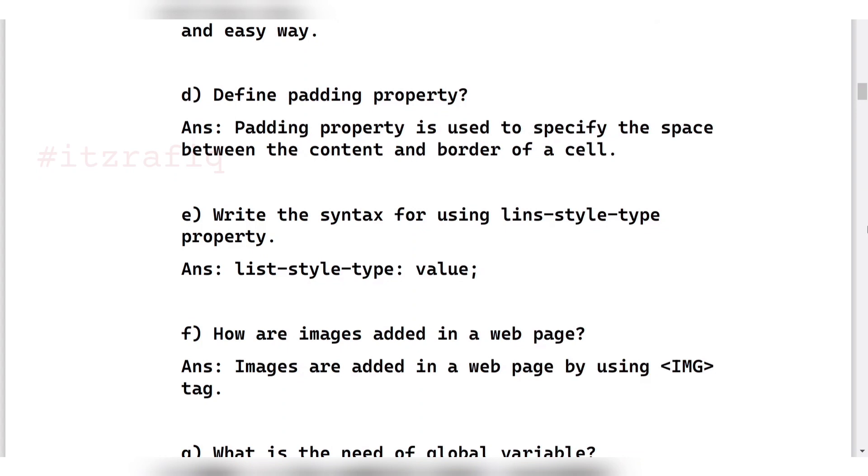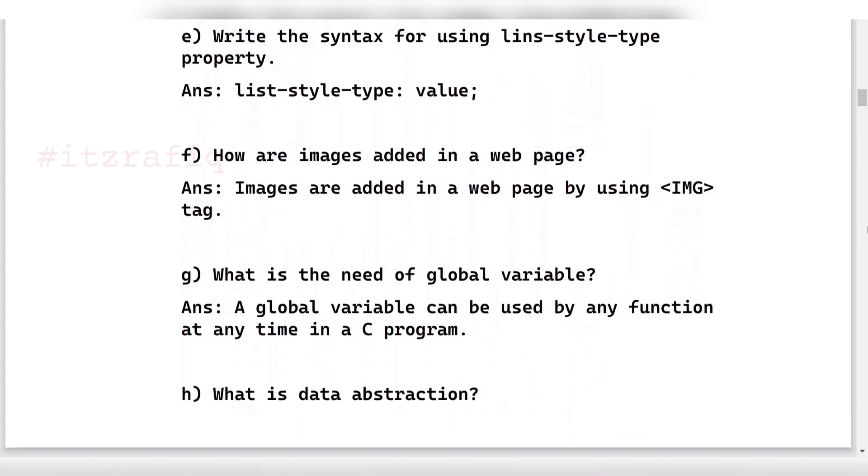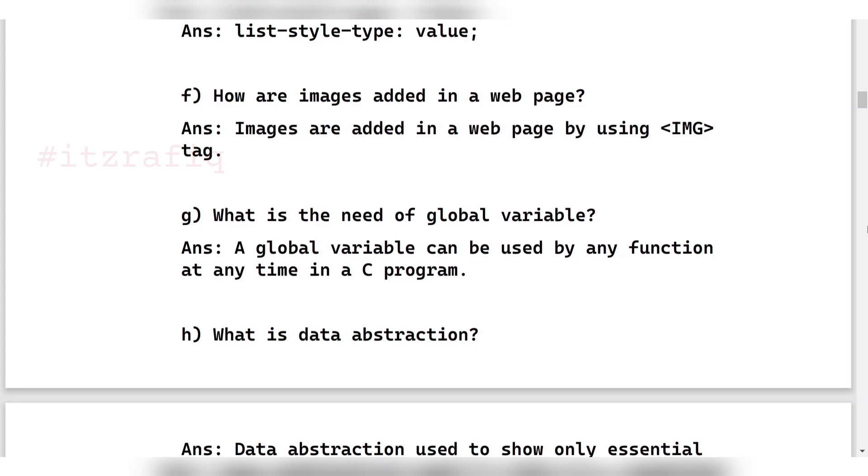Then the next question: What is the need of global variable? A global variable can be used by any function at any time in a C program. If we declare the variable outside the function, then it can be used by all functions. But if we declare a variable inside the function, then it can be accessed only within that function. That type of variable is known as local variable.